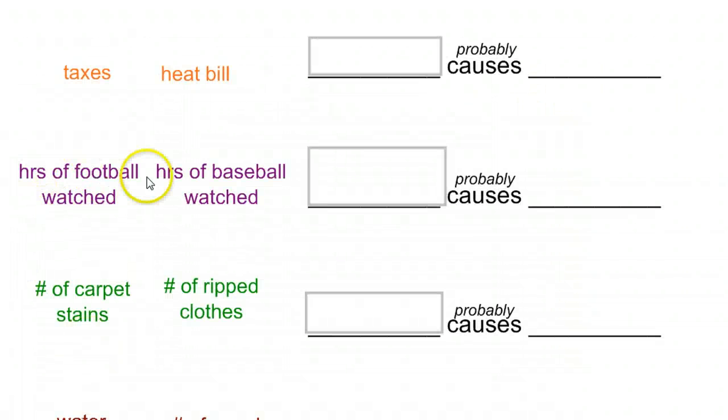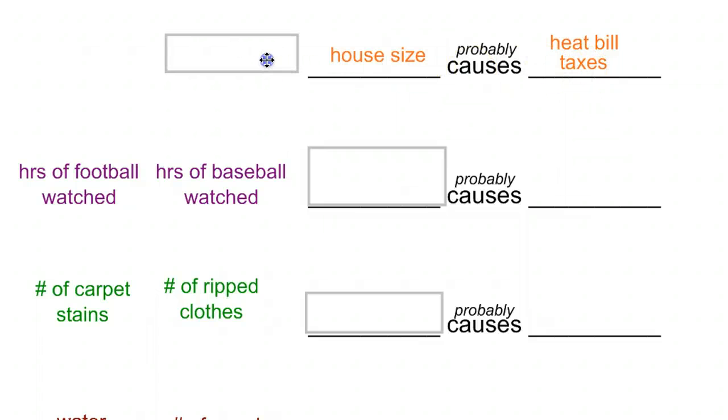Now let's go through some examples of lurking variable situations. The amount that you pay in taxes and the amount in your heat bill are correlated, they are related. However, which one probably causes both of those things to happen would be the size of your house. If you have a large house, it's going to cost more to heat it. And if you have a large house, it's probably going to cost you more in taxes.